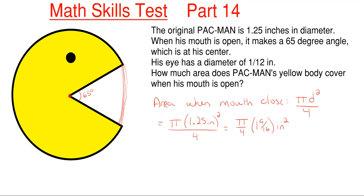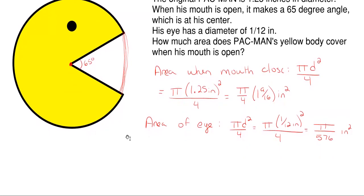So let's also find out the area of his black eye here, which is going to be very similar to the way we just found when his mouth is closed. Area of his eye would be pi d squared over 4 again. But this time his diameter of his eye is 1/12th of an inch squared over 4. And this pops out to be π/576 inches squared. So very small area right there.